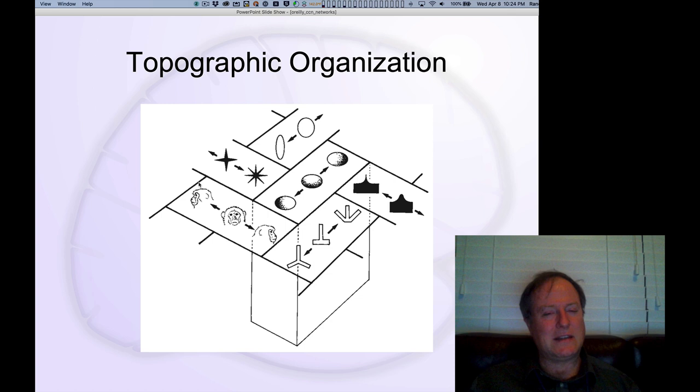There's some indication that some of these features may have some kind of topographic organization, which is to say that nearby regions have similar patterns of responses. This is not universally found, and there's some debate about this, but there may be some systematic dimensions of organization and topography, this mapping of features onto different regions of the brain.